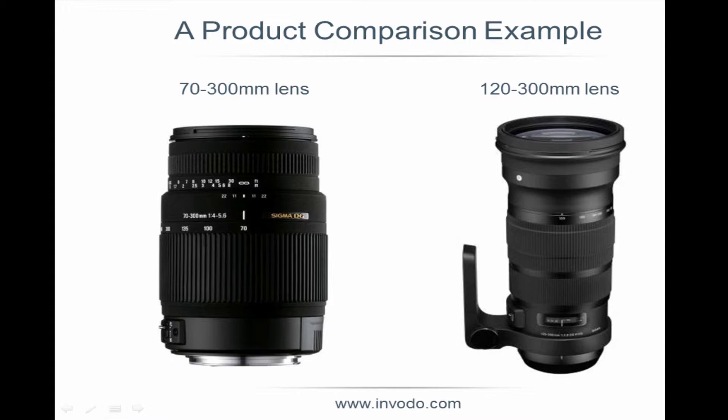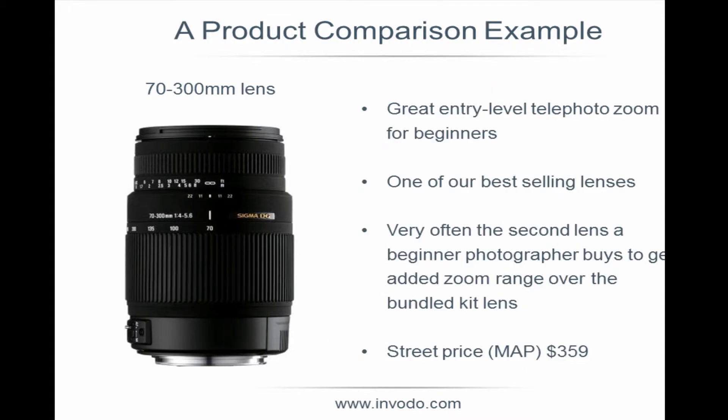Here are two lenses: a 70-300mm lens and a 120-300mm lens. On paper, these look very much the same, but they are very different products geared towards very different market segments. The 70-300mm is a great entry-level telephoto zoom lens for beginners — one of our best-selling lenses. It's often the second lens someone buys because it gives them reach for the soccer game or birds at the park. It has a street price of $359.